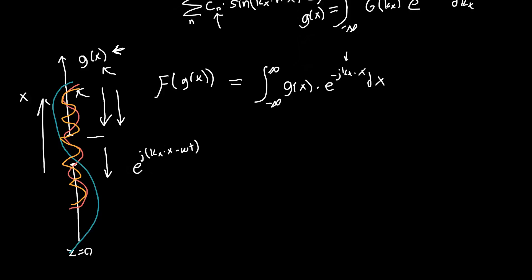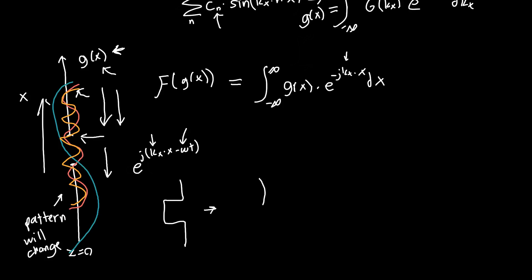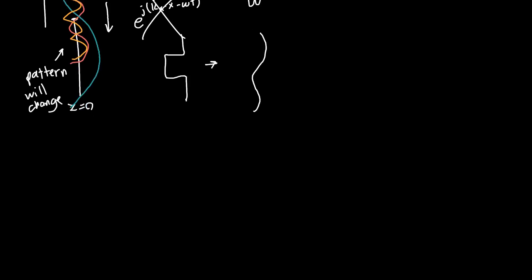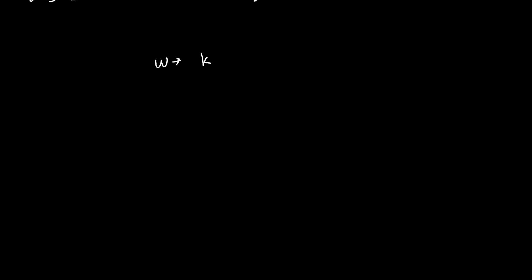The problem with that is that each of these sine waves not only has a different spatial frequency kx, but also has a different temporal frequency omega. So this pattern that you form at this plane will change with time—it might initially look like this rectangular aperture, but eventually it'll smear out and become something you don't want. So this is not an ideal way of decomposing our aperture function. We would like to use a bunch of plane waves with the same frequency omega, so that our pattern is not a function of time. But how do you use just a single omega, or equivalently just a single wave number k, to represent a bunch of different kx values?